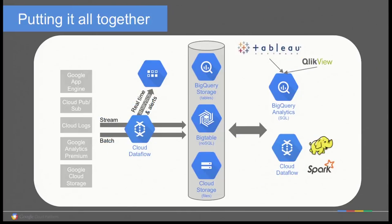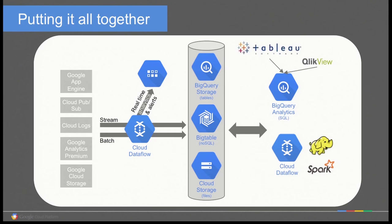Dataflow fits in a larger picture of cloud services. Thinking about the lifecycle of data — from ingestion through preparation, storage, and processing — Dataflow plays in two places. It's used a lot in preparation: as data arrives, you may want to format it, enrich it, anonymize it, or clean it, and that can be done in Dataflow. You write your pipeline once — whether data is streaming or arrives in batch, the same program handles it and writes to our storage systems.